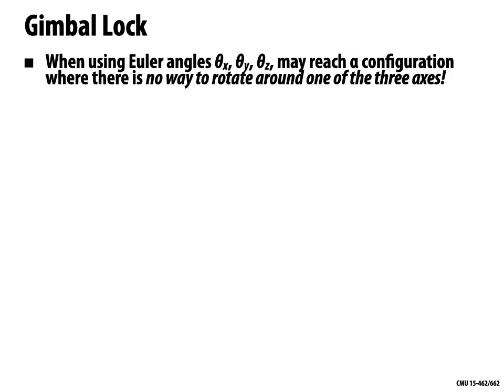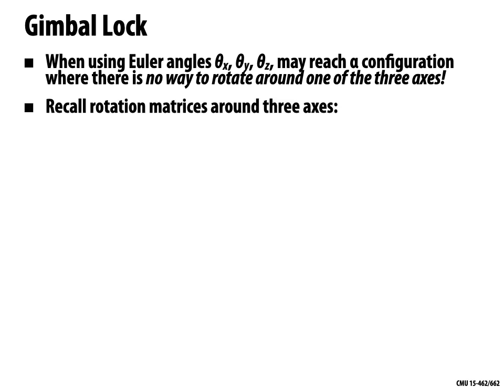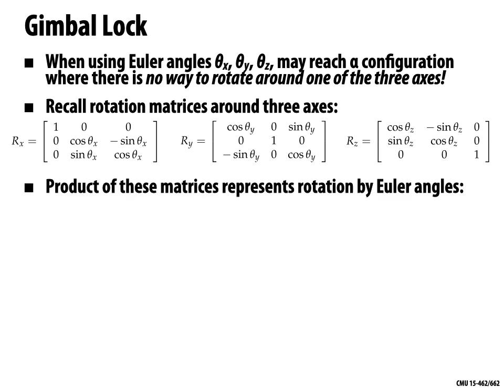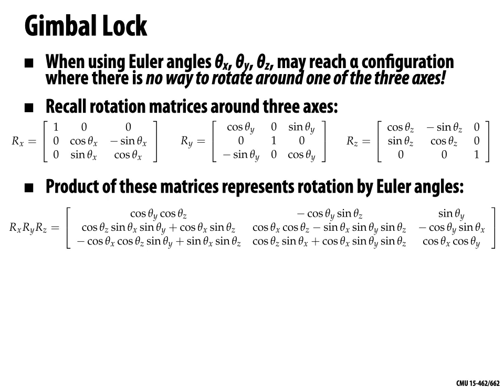When you're using Euler angles, you might reach a configuration where there is no way to actually rotate around one of the three axes. Let's recall what the rotation matrices look like for the three axes — we have rotations around X, around Y, around Z. A general rotation involving these three different angles is obtained by multiplying these three matrices together, and you get this big mess of a formula. Already we see one drawback: to write out the general expression for rotation, it's super complicated — certainly not something to memorize.